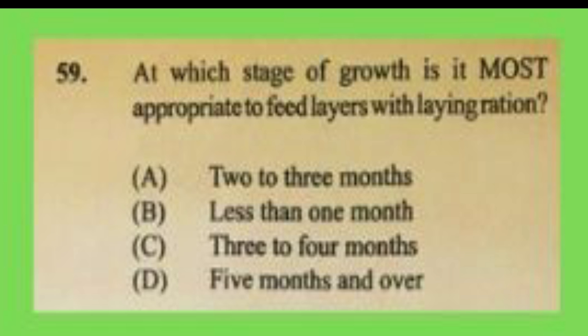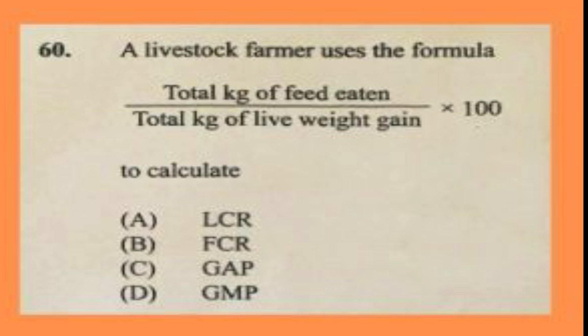Question number fifty-nine: at which stage is it most appropriate to feed layers with a laying ration? A) two to three months, B) less than one month, C) three to four months, D) five months and over. The answer is D, five months and over. Question number sixty: a livestock farmer uses the formula total kg of feed eaten ÷ total kg of live weight gain × 100 to calculate A) LCR, B) FCR, C) GAP, D) GMP. The answer is B, FCR, which is feed conversion ratio.